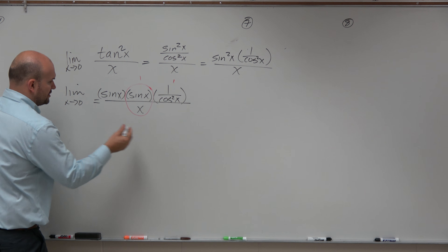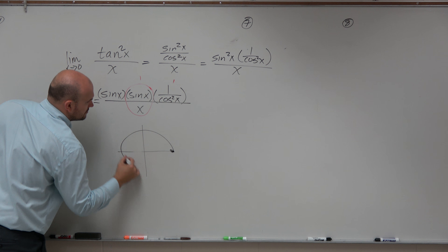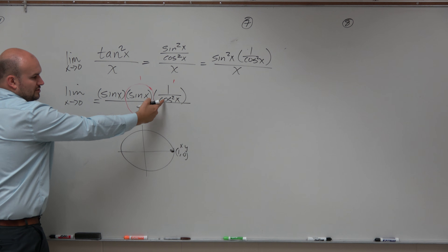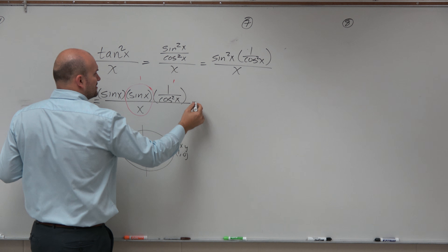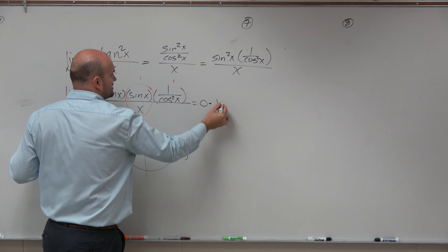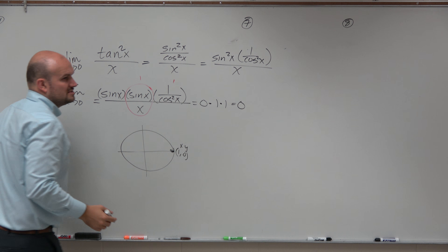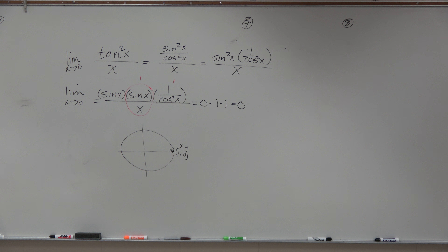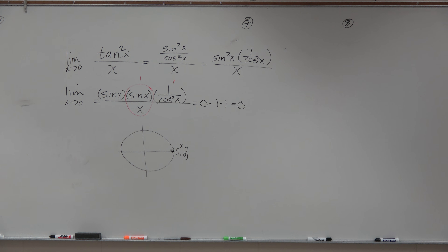At least this way we can group this together. We know that's going to go to 1. If we plug 0 in for cosine, cosine at 0 is going to be 1. Square that is 1. 1 divided by 1 is 1. But if we plug 0 in for sine of x, the sine of 0, knowing the unit circle — cosine is 1, so sine is going to be 0. So it's 0 times 1 times 1, which equals 0.